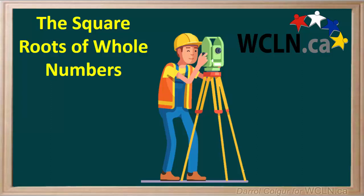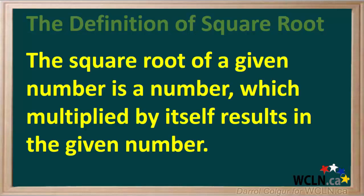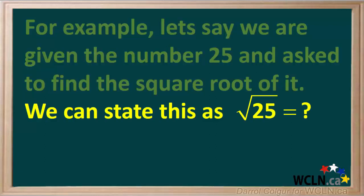Do you remember what the square root of a number means? Let's review the definition of a square root. The square root of a given number is a number which, multiplied by itself, results in the given number. For example, let's say we're given the number 25 and asked to find the square root of it. We can state this with a square root symbol, and we read this as: the square root of 25 equals question mark.